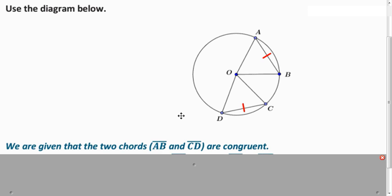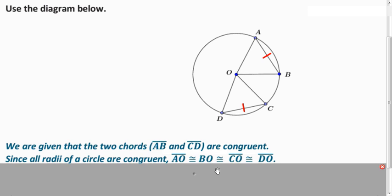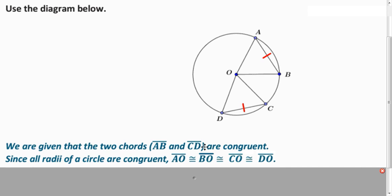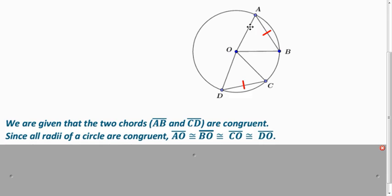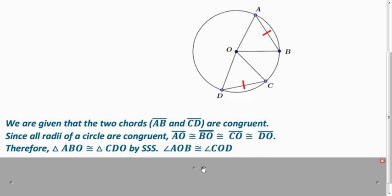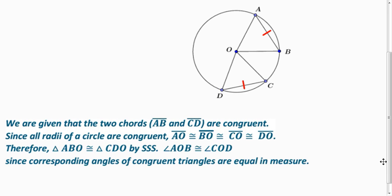So we have these segments. What else do we know is congruent in both triangles? Well, their other sides are also all congruent because of the radii of the circle. So AO is congruent to BO, congruent to CO, congruent to DO. So now we have, like before, we have side-side-side. All the corresponding sides are congruent. So we know that those angles are congruent because they're corresponding angles.